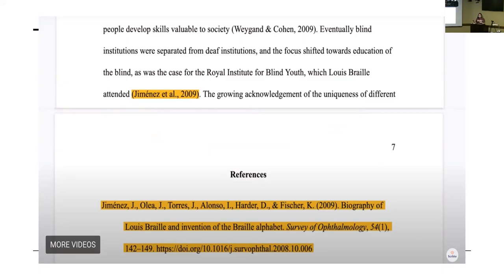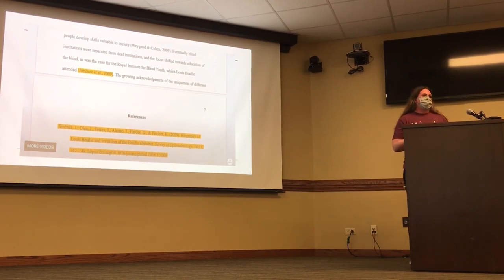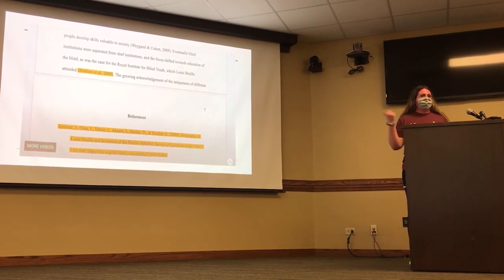Here I have an example of what the in-text citation and reference page should look like. The in-text citation has the last name and then the date of publication, and you always put it after whatever quotation you make. Your APA reference page should always say 'References,' not 'Works Cited' or 'Bibliography' — that's MLA, not APA. Then you have the author first, date of publication, title of the work, and if it was on a webpage, journal, or website, you include the URL or DOI.